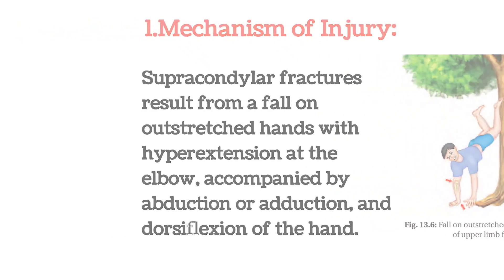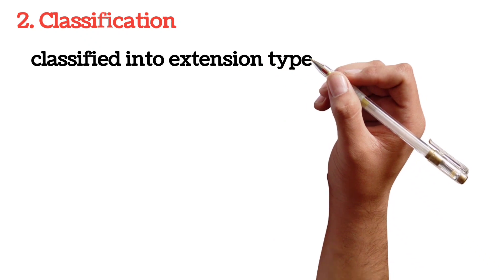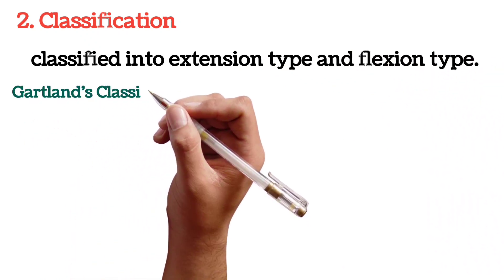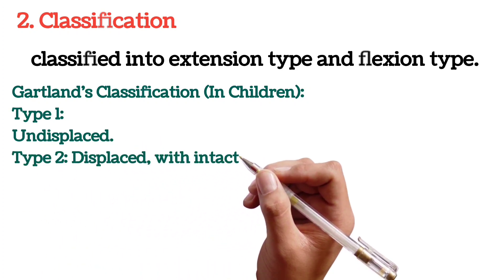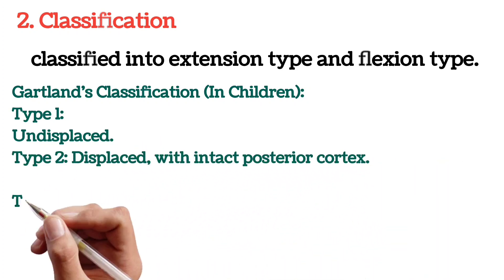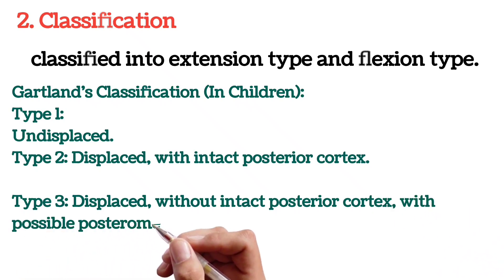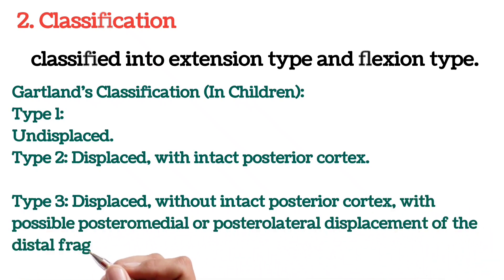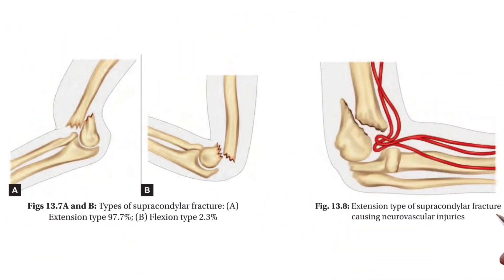Classification: Supracondylar fractures are broadly classified into extension type and flexion type. Gartland's classification in children: Type 1 is undisplaced; Type 2 is displaced with intact posterior cortex; Type 3 is displaced without intact posterior cortex, with possible posteromedial or posterolateral displacement of the distal fragment.